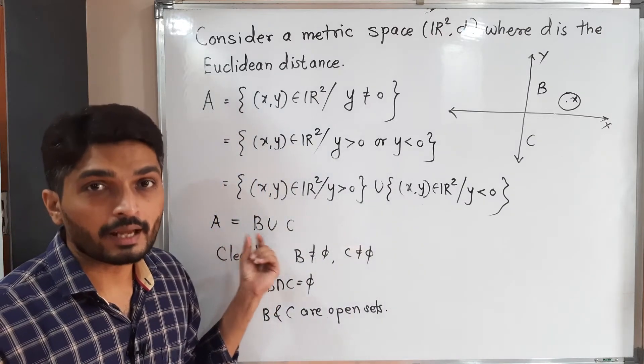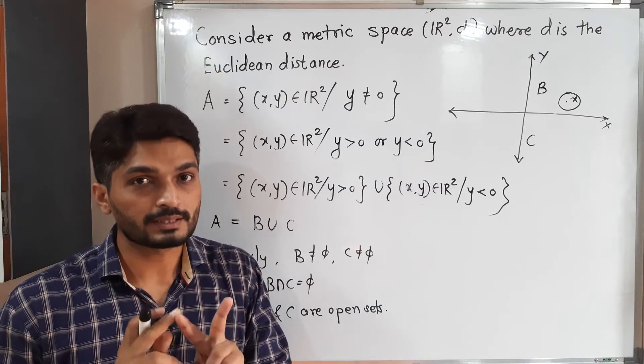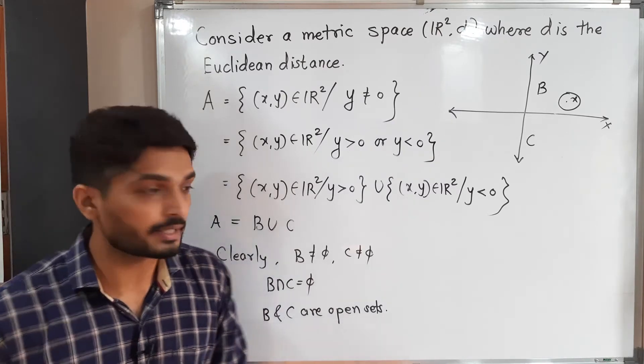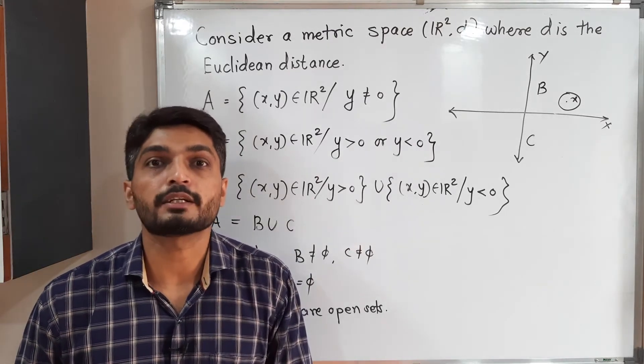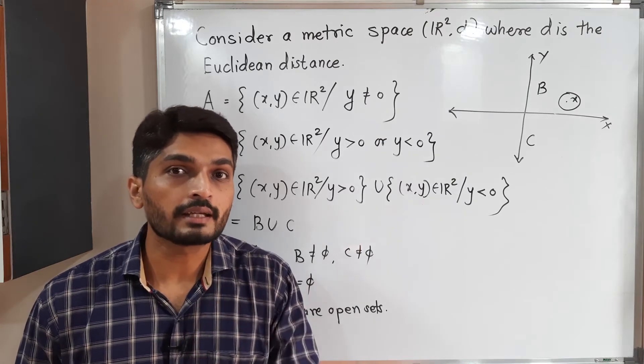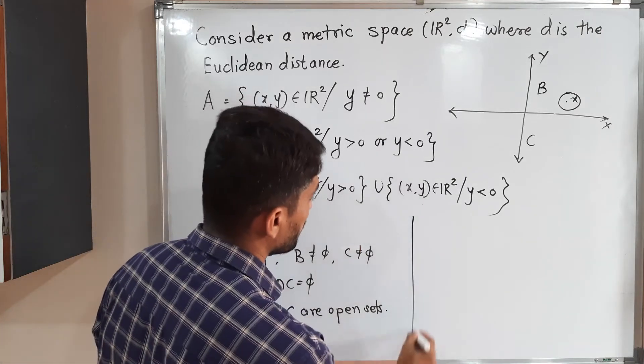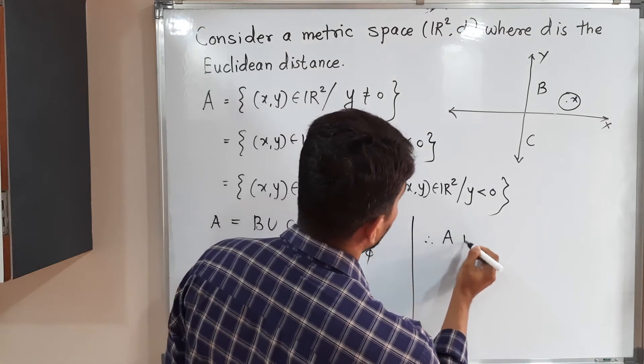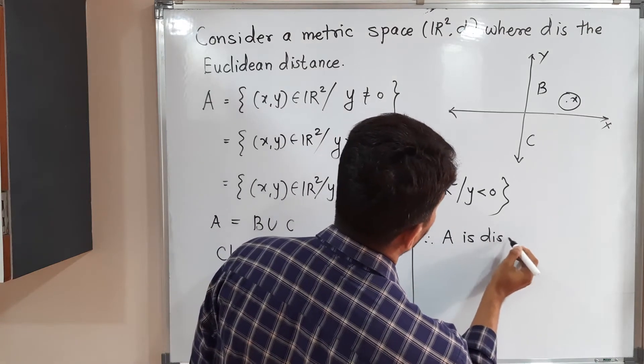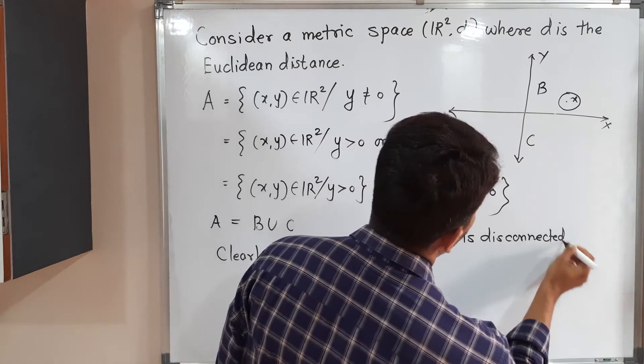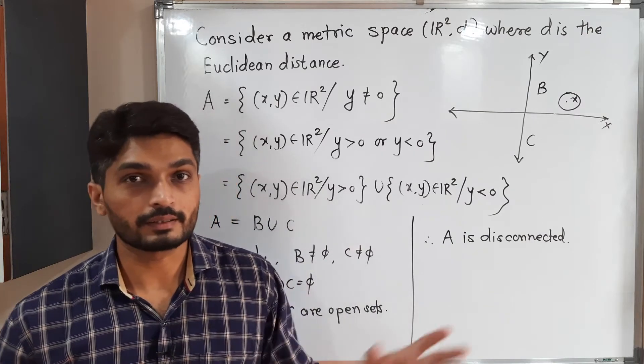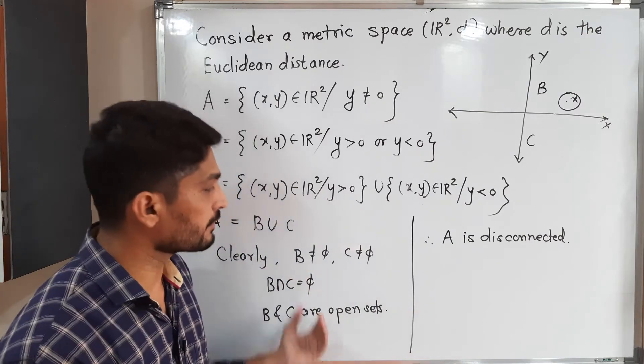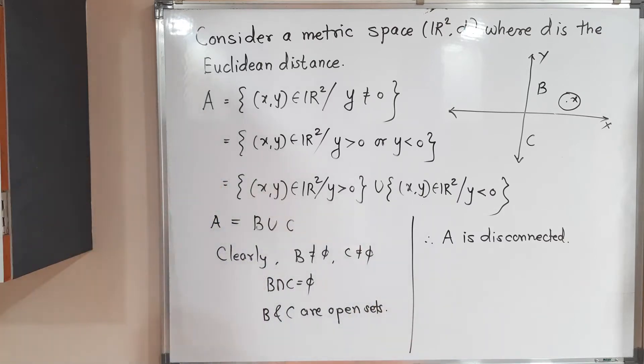What is our conclusion? We could express A as a union of two non-empty, proper, disjoint sets such that both sets are open. So by definition, the equivalent definition of disconnected metric space, we can say set A is disconnected. Therefore, A is disconnected. These are very important definitions, equivalent definitions of disconnected metric space. You can take a screenshot of it. After that, we will go further.